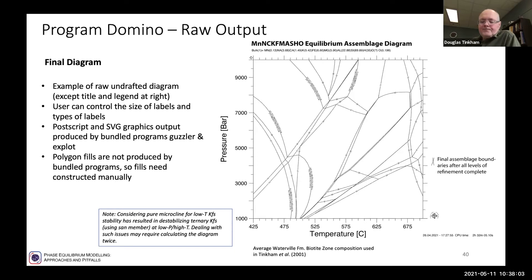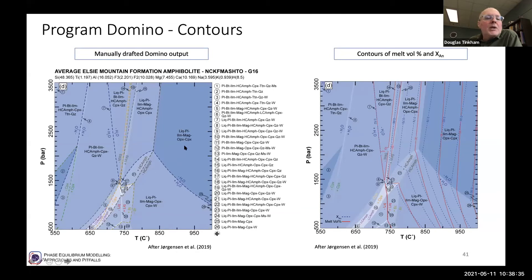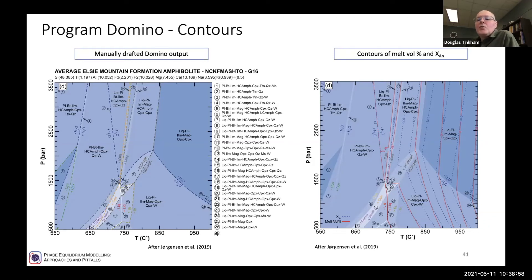Here are some example drafted-up diagrams from Taos Jorgensen's PhD work on metabasite compositions from Sudbury in a contact aureole, using the Green et al. 2016 set of activity models. These are nice equilibrium assemblage diagrams with assemblage boundaries. You can also calculate contours instead of assemblage boundaries — for example, contours of mineral compositions and mineral modes, such as the volume percent of melt produced shown in red lines, and the mole fraction of anorthite in feldspar shown in blue lines.